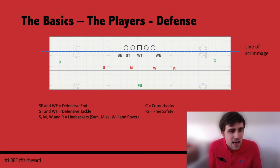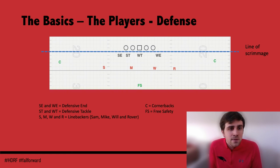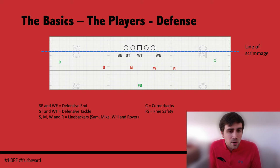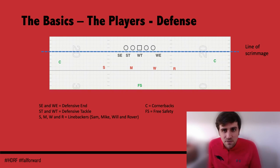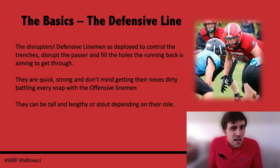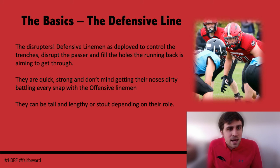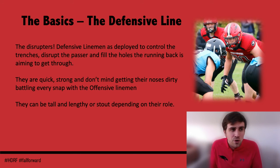The defensive line are the guys who disrupt everything the offence is trying to do. Defensive linemen are deployed to control the trenches — they're there to disrupt the passer and fill the holes the offensive line are trying to make for the running back to get through. Depending on the type of lineman: if you're a defensive end, you tend to be quick but also need to be strong to move the big offensive linemen.